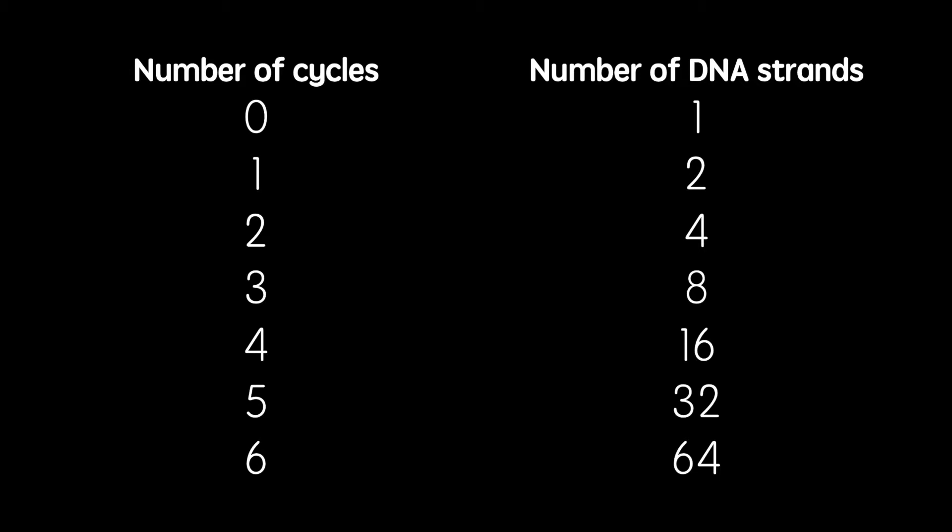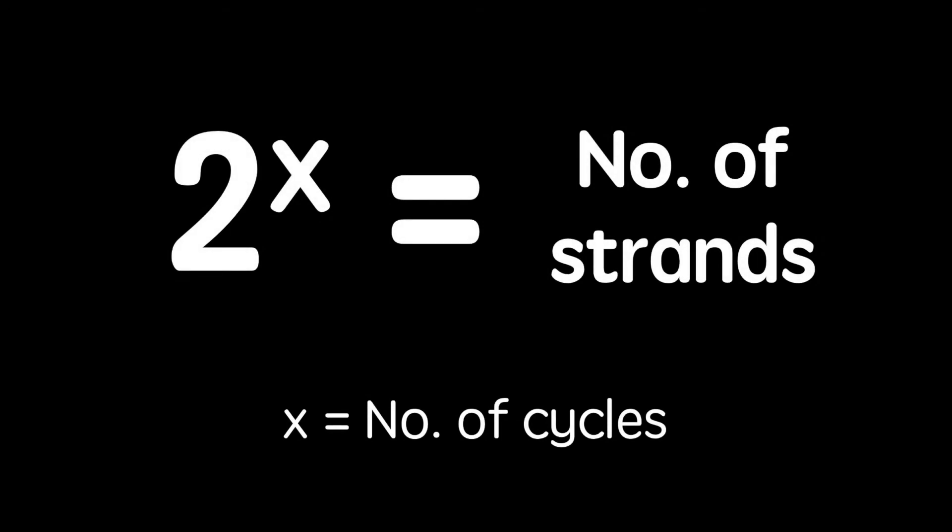In order to calculate the number of strands hypothetically produced, use the equation 2 to the power of the number of cycles.